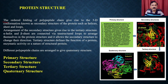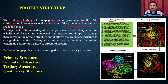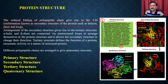The ordered folding of the polypeptide chain gives rise to the 3D conformation known as the secondary structure of the protein, such as the helix, sheets, and loops. In the primary structure, all amino acids are present — the first amino acid has the N-terminus while the last has the C-terminus. When this primary structure folds, it gives the secondary structure, which includes alpha helices, beta sheets, and turns.